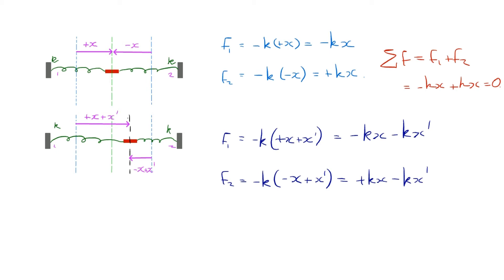So, this time, we still need to find our resultant force because this is going to show us if the displacement is proportional to the resultant force and towards equilibrium. So, let's have a go where it's going to be F1 plus F2. We've got minus kx minus kx dash plus kx minus kx dash. We can see that those two cancel each other out. And what we're left with is minus 2kx dash.